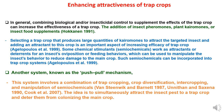Now to study the enhancing attractiveness of trap crops. In general, combining biological or insecticidal control to supplement the effects of the trap crop can increase its effectiveness. This includes the addition of insect pheromones, plant pheromones, or insect food supplements.